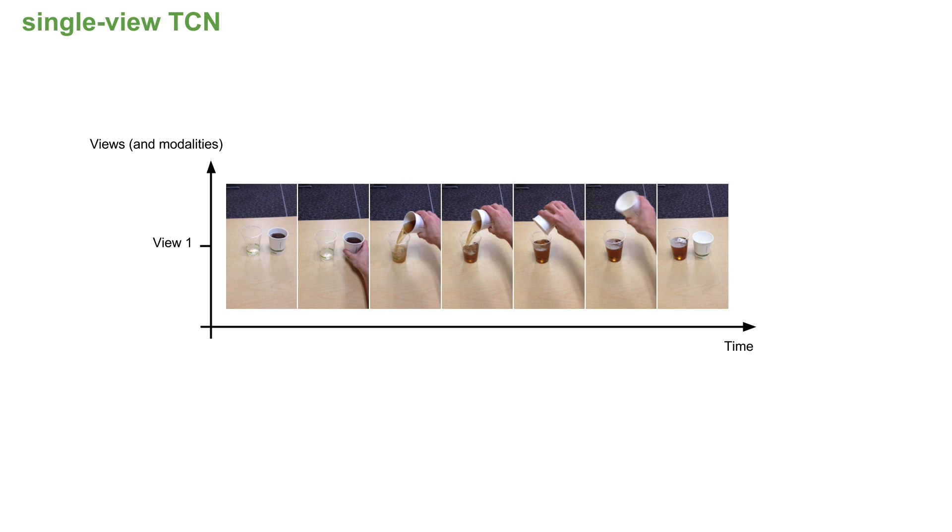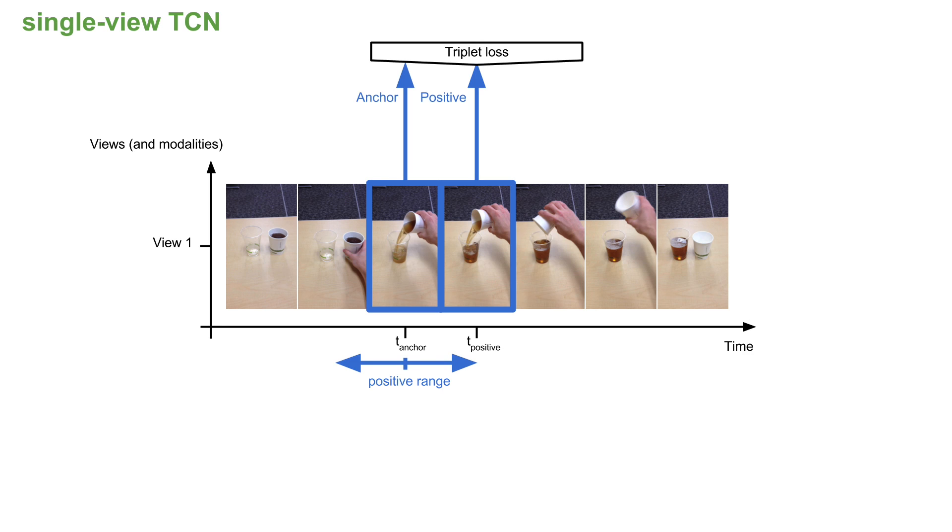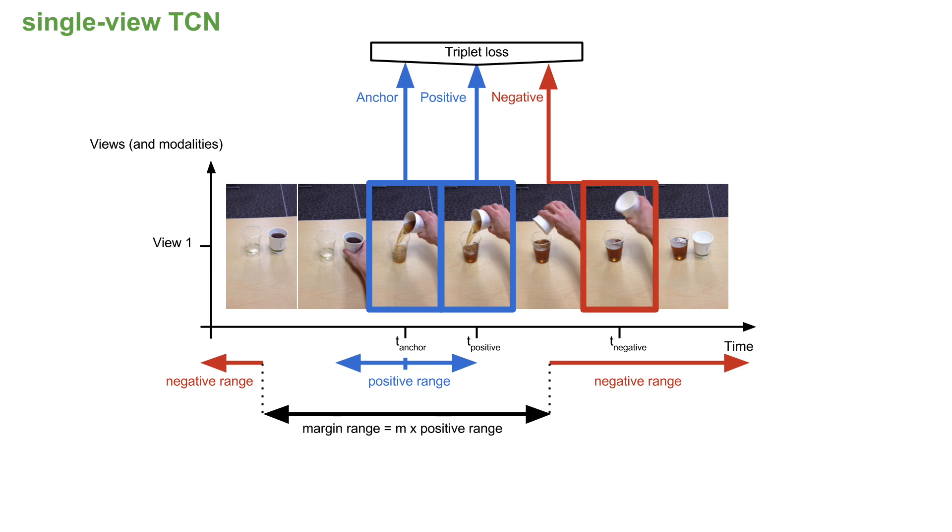We can also consider a time-contrastive model trained on only one view. This time, the positive frame is randomly selected within a certain range of the anchor. A margin range is then computed given the positive range. Negatives are randomly chosen outside the margin range, and the model is trained as before.